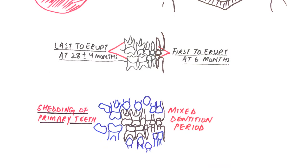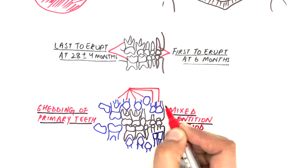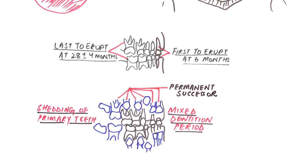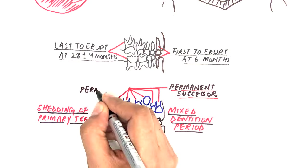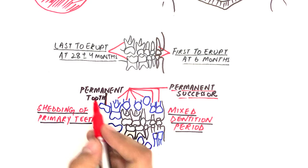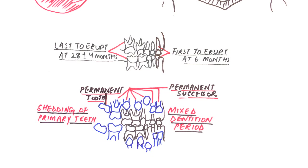The permanent teeth that erupt in the spaces of primary teeth are called successors or succedaneous teeth because they replace the primary teeth. Therefore, any permanent tooth emerging and replacing a primary tooth will be the permanent successor of the corresponding primary tooth. Any permanent tooth emerging in a place other than the place of the deciduous teeth will not be a successor, but just a permanent tooth — as in the case of permanent molars.